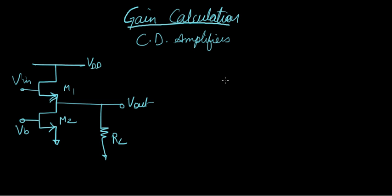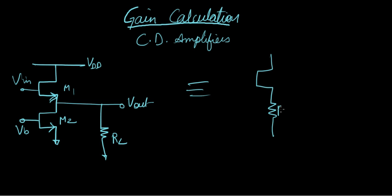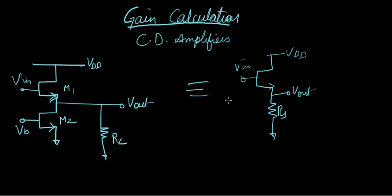Hopefully you've watched the previous video. What we're going to do here is calculate the gain of this amplifier. This is basically just the simple one we've seen before — RS, Vout, Vin, and VDD. This is the common drain amplifier we've seen. What we've done here is just replaced RS by a transistor because we cannot use discrete resistances, and it is also driving a load resistance called RL.